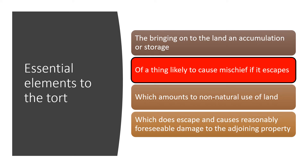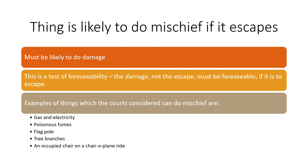The second element is a thing likely to cause mischief if it escapes. This means the thing which escapes is likely to cause some damage — it is a test of foreseeability. It is the damage and not the escape which must be foreseeable. So it's not that it was foreseeable the thing would escape; rather, if the thing does escape, it is foreseeable that it will cause damage.